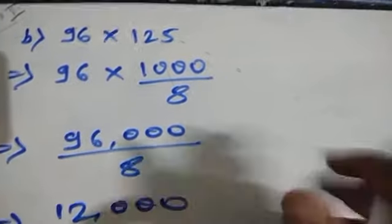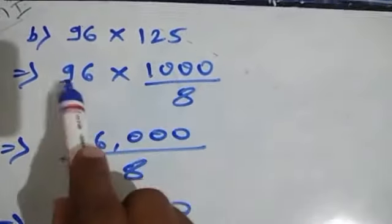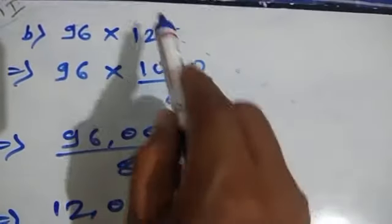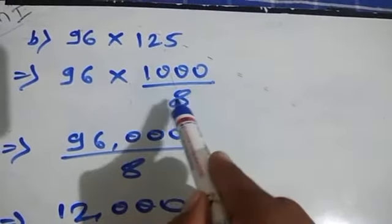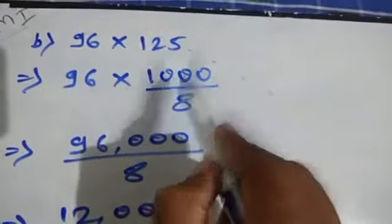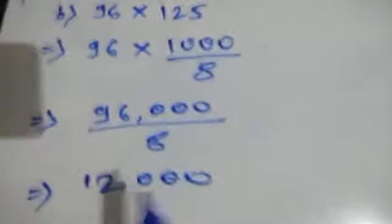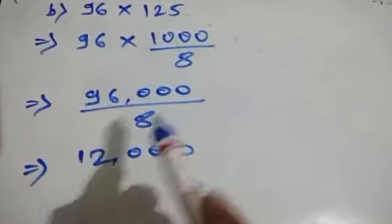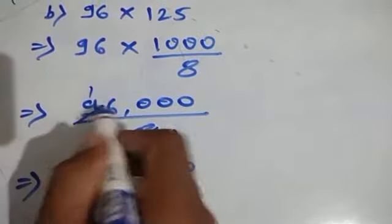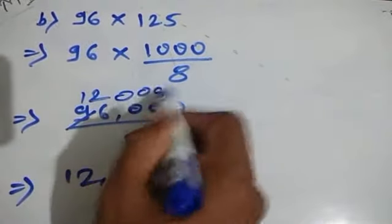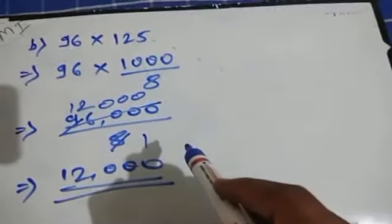See one more example: 96 × 125. We write 125 as 1000 ÷ 8, since 1000 ÷ 8 = 125. So 96 × 125 = 96 × 1000 ÷ 8 = 96,000 ÷ 8. Dividing 96,000 by 8 gives 12,000. In this way we can make problems very easy using shortcut tricks.